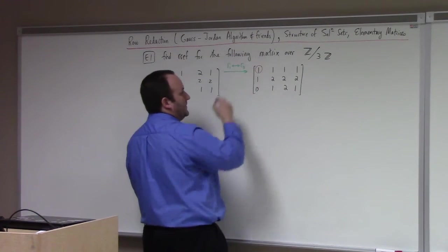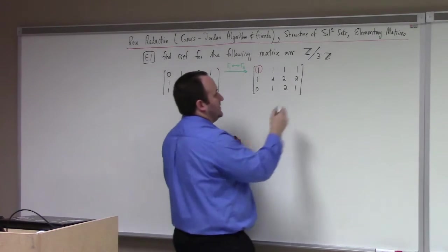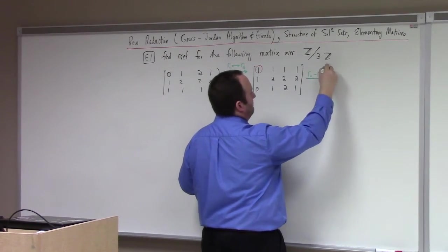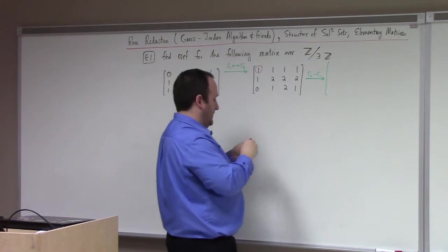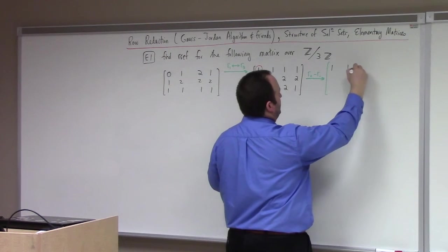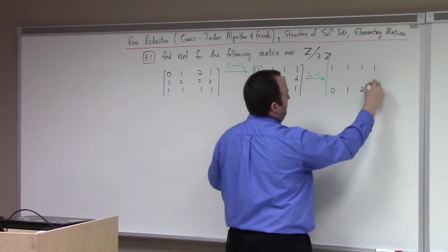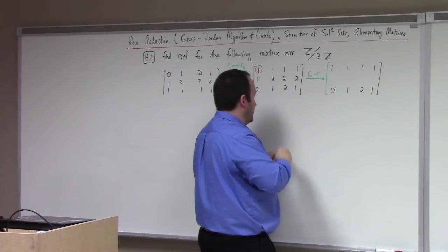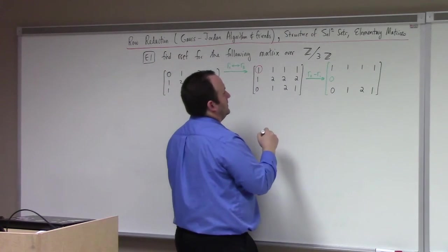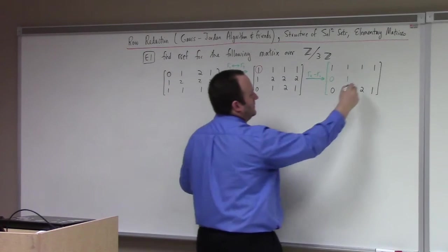So my first pivot position is now where it needs to be. Now I want to clear out under the first pivot position. To do that, I subtract — I do row 2 minus row 1. Row 1 and row 3 don't change. Row 2 is modified to 0, 1, 1, 1.